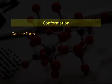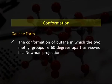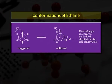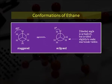Now we will discuss the gauche form. In this conformation of butane, the two methyl groups lie 60 degrees apart as viewed in the Newman projection. In the eclipsed conformation, the carbon-hydrogen bonds on the front and back carbons are aligned with each other with dihedral angles of 0 degrees. In the staggered conformation, the carbon-hydrogen bonds on the rear carbon lie between those on the front carbon with a dihedral angle of 60 degrees.